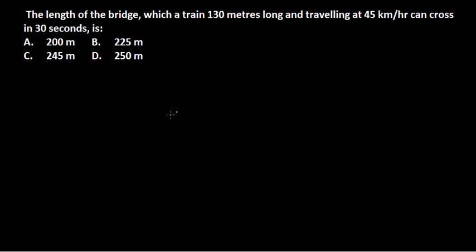Let's solve this problem. A train 130 meters long traveling at 45 km per hour can cross a bridge in 30 seconds. In all these questions, you need to find what they're asking for and understand the situation.